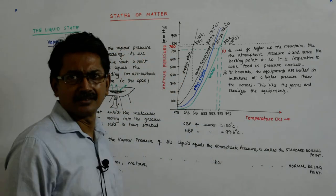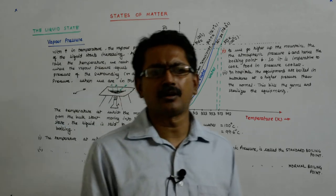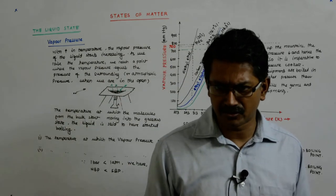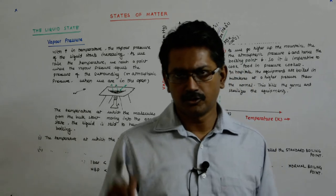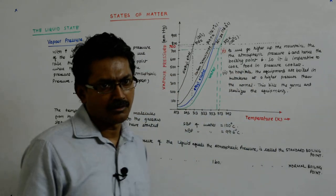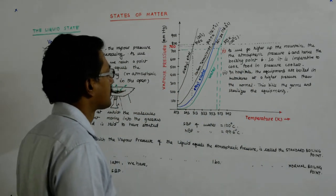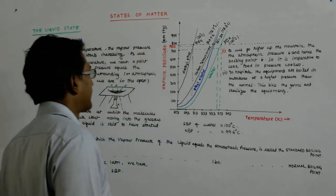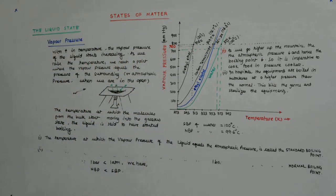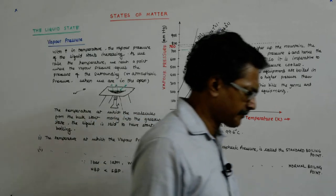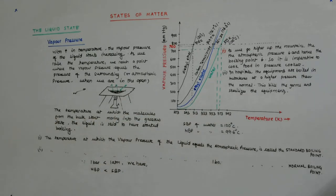There are so many things - the forceps, the scissors - you cannot keep throwing them after one operation, so you put them in autoclaves. Now, one more point: suppose you have a transparent cooker and you start heating water.